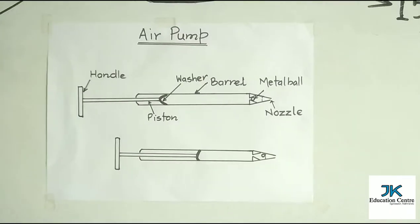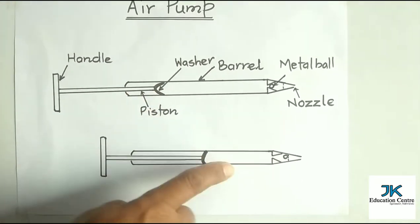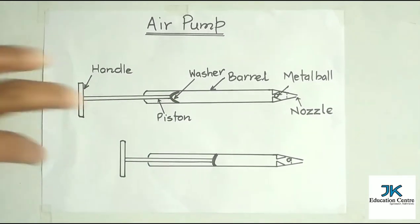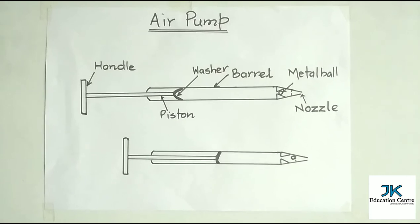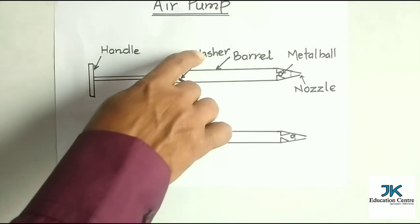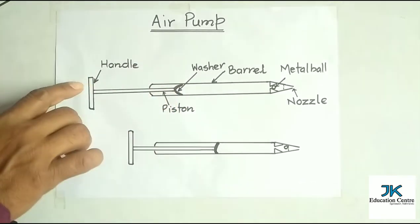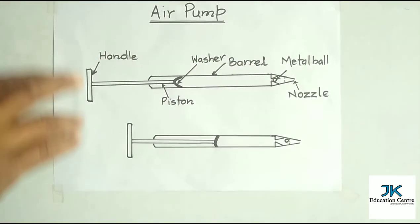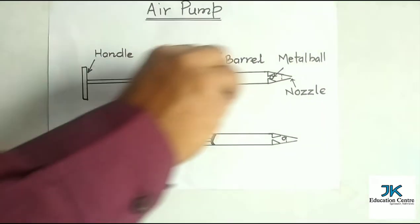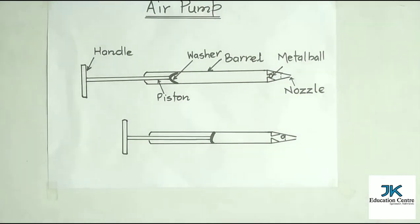Now how does it look? What is its construction and how does it work? I'm going to show you with the help of a diagram. If you are told to draw the diagram of an air pump, you can draw this type of diagram. Basically there are two main parts: one is the barrel, and another is the piston. The piston has a washer at its tip which comes in very close contact with the inner wall of the barrel. When the handle is pushed or pulled, this washer also moves along with the piston, achieving forward and backward movement.